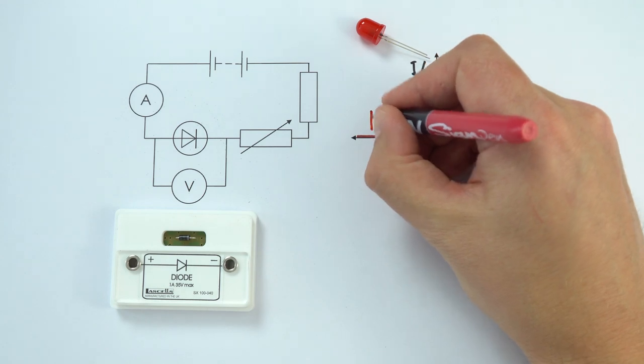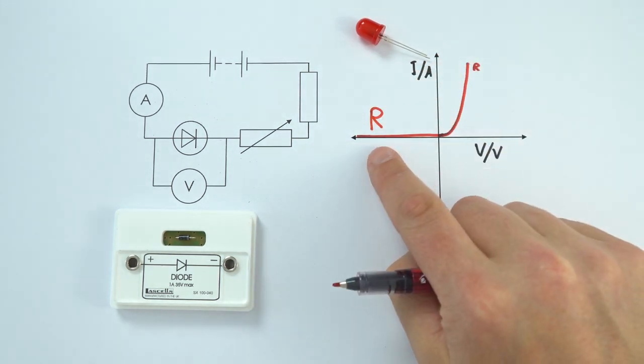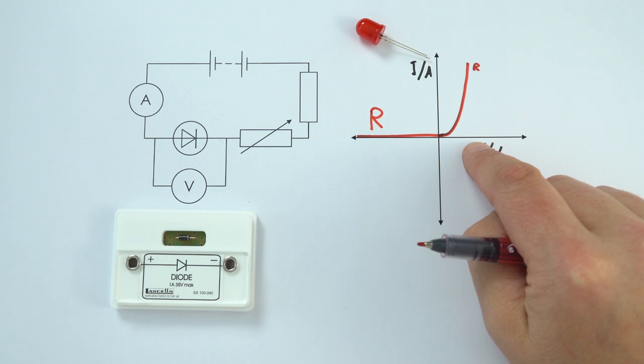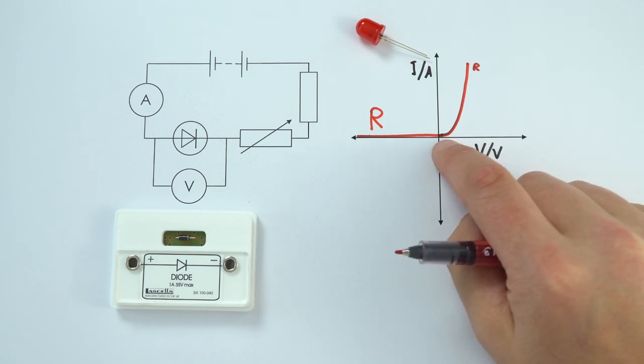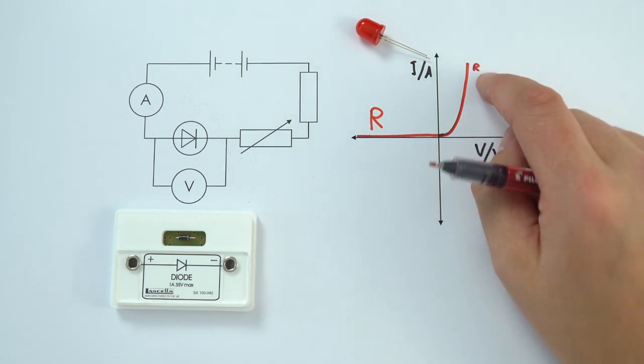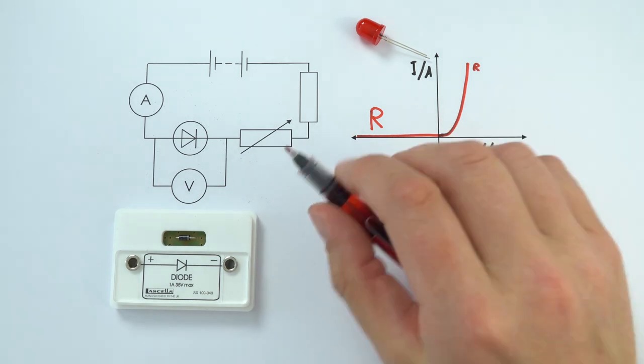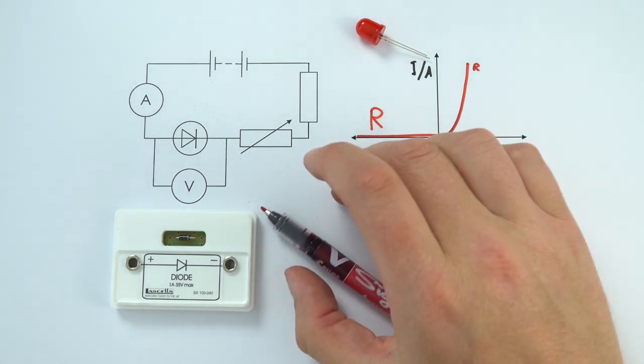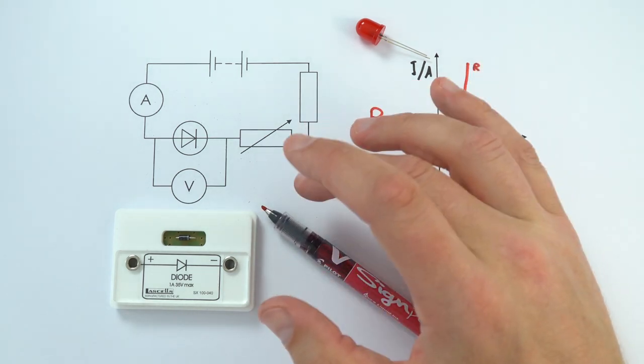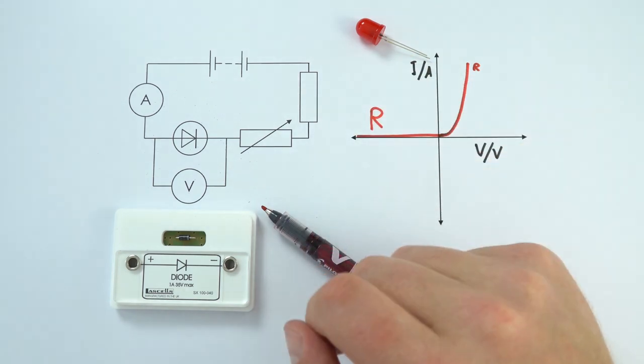So this component, it's got a very high value of resistance in one direction so no current flows. But when you've got a positive value of potential difference, it means that it's got a very low resistance. It's effectively this one-way valve, a really useful electrical component because it allows us to control which way the current is flowing in real life circuits.